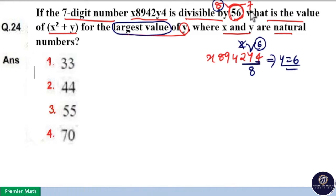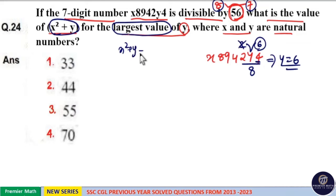Now check the divisibility rule of 7. But before that, the question is asking us to find x squared plus y. So x squared plus y means x squared plus 6.